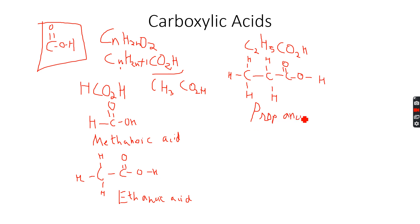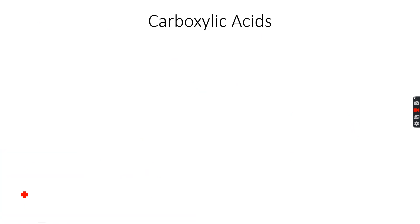You can see how we are doing the naming. Similarly, we can have butanoic acid, pentanoic acid, hexanoic acid, and so on. Now let's look at some isomers of carboxylic acids.